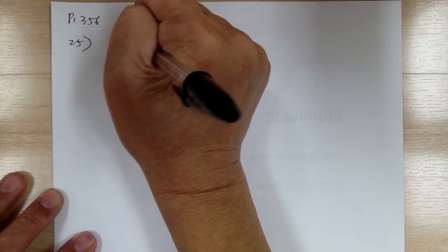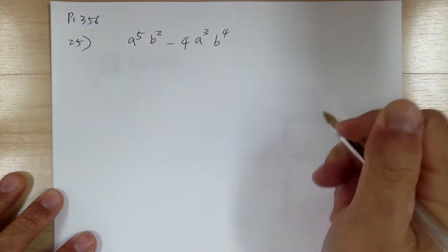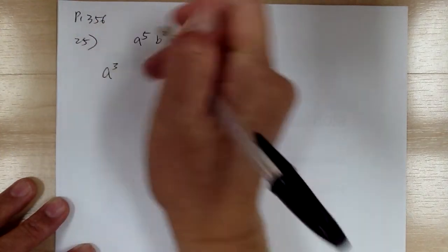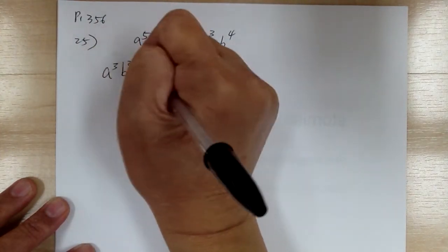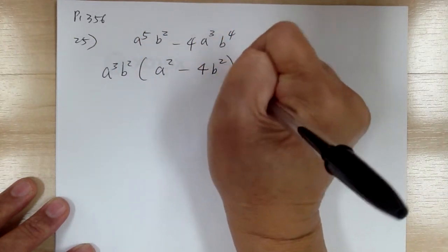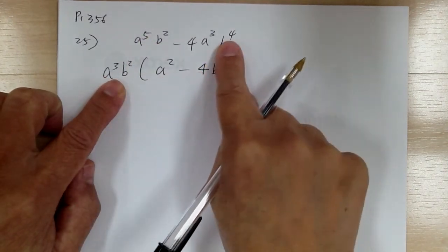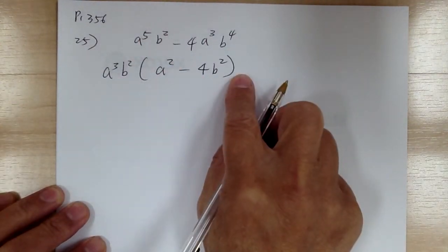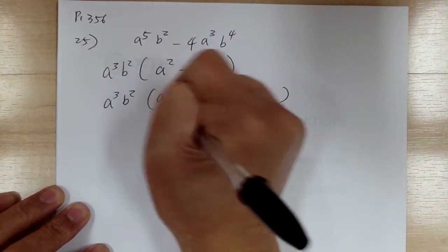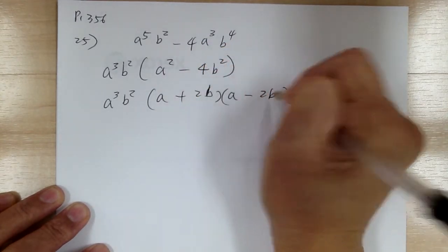Number 25. You have a to the 5 b squared minus 4a cubed b to the 4. Step 1, common factor. You have a cubed and a to the 5, so factor out a cubed. You have b squared and b to the 4, so factor out b squared. This becomes a cubed b squared times a squared minus 4b squared. Double check. This is step 2a, difference of squares. Get two sets of parentheses: a, a, plus, minus, 2b and 2b. And that's it.